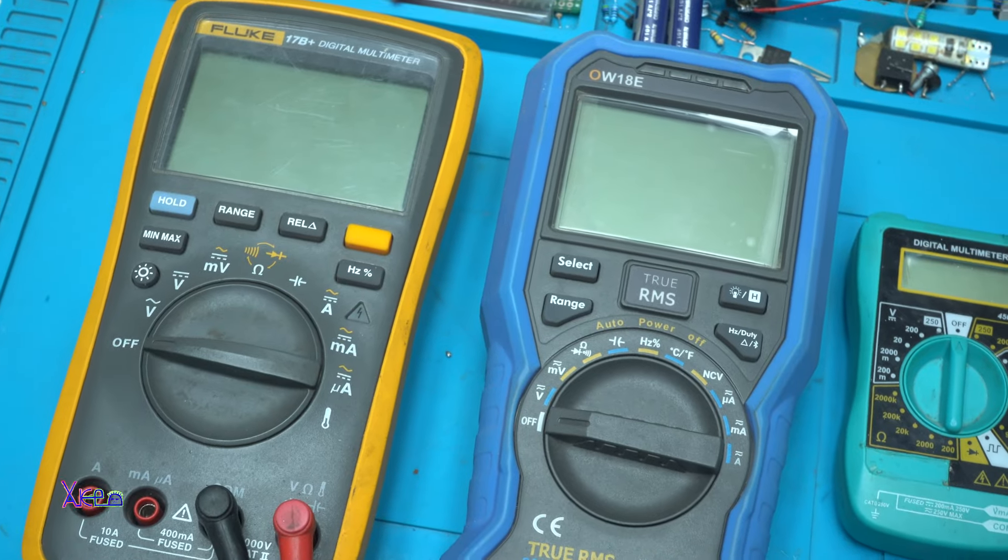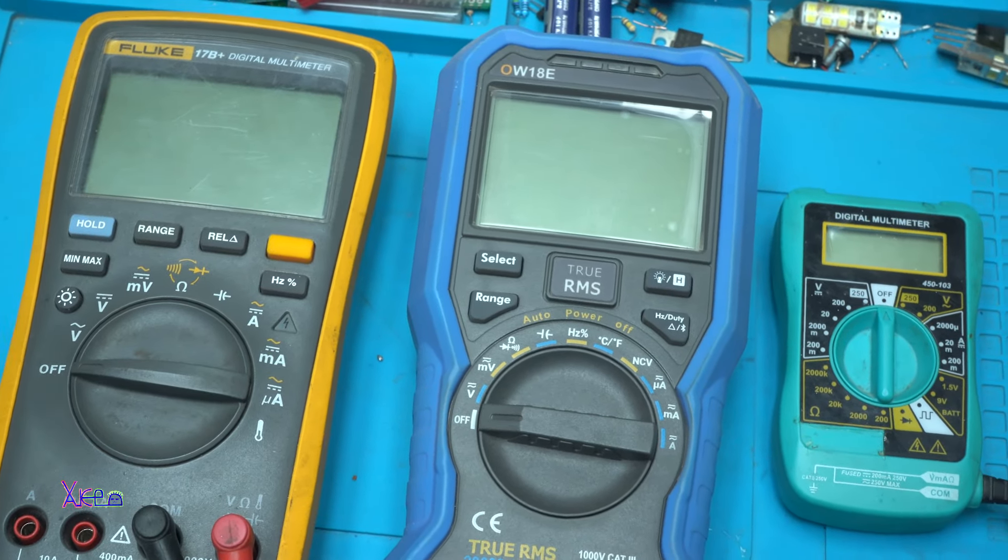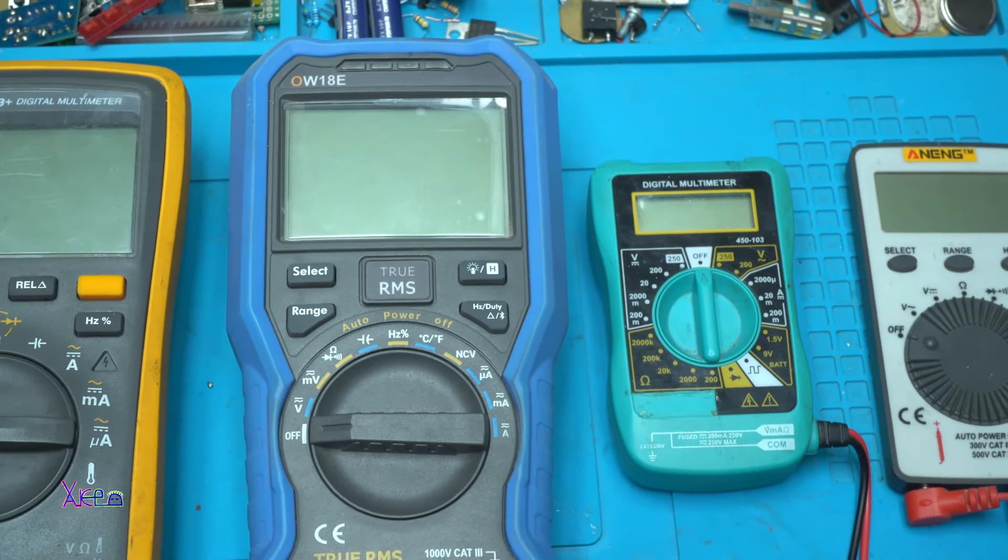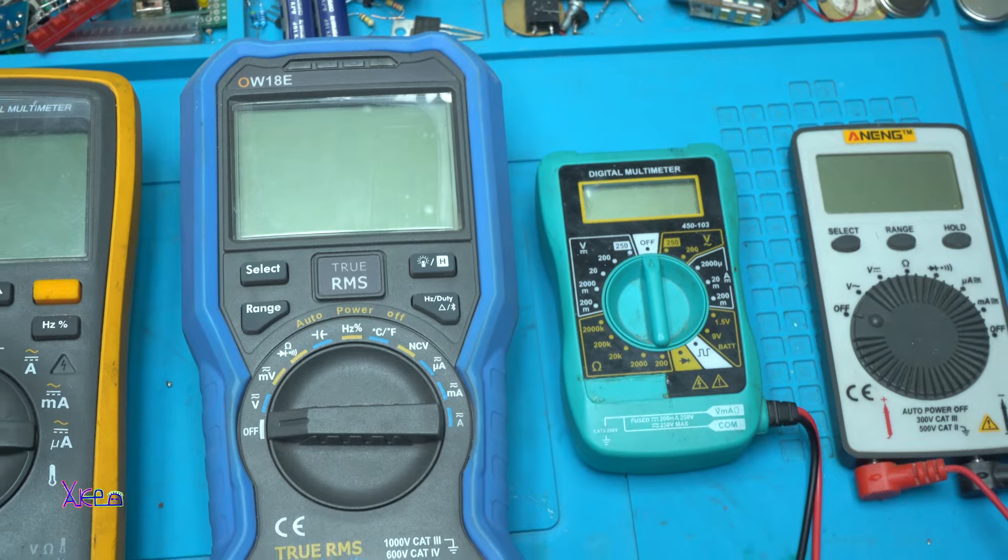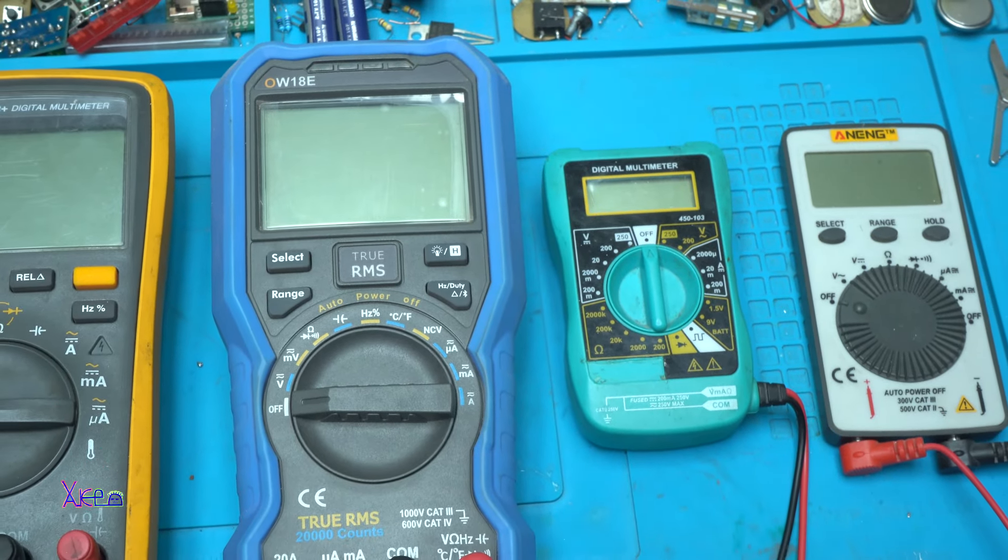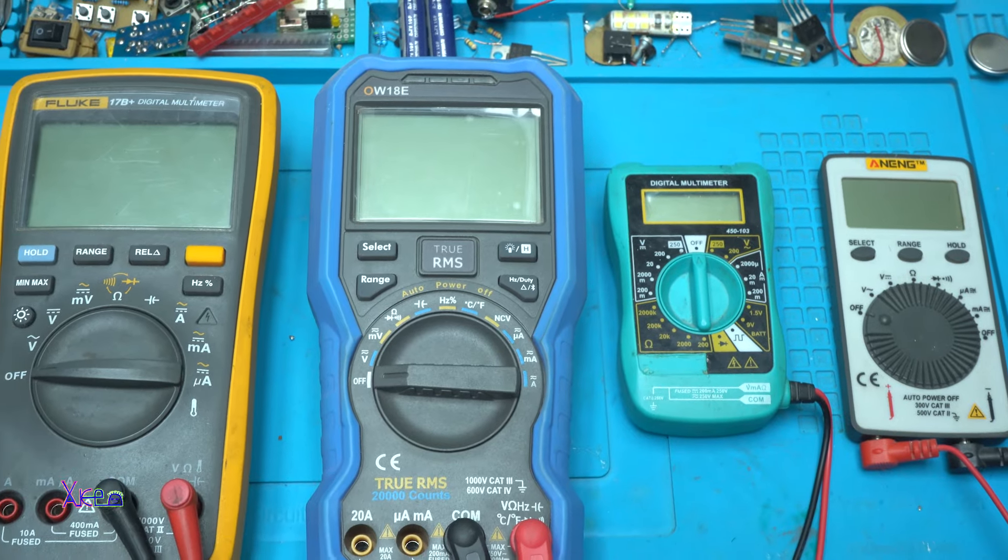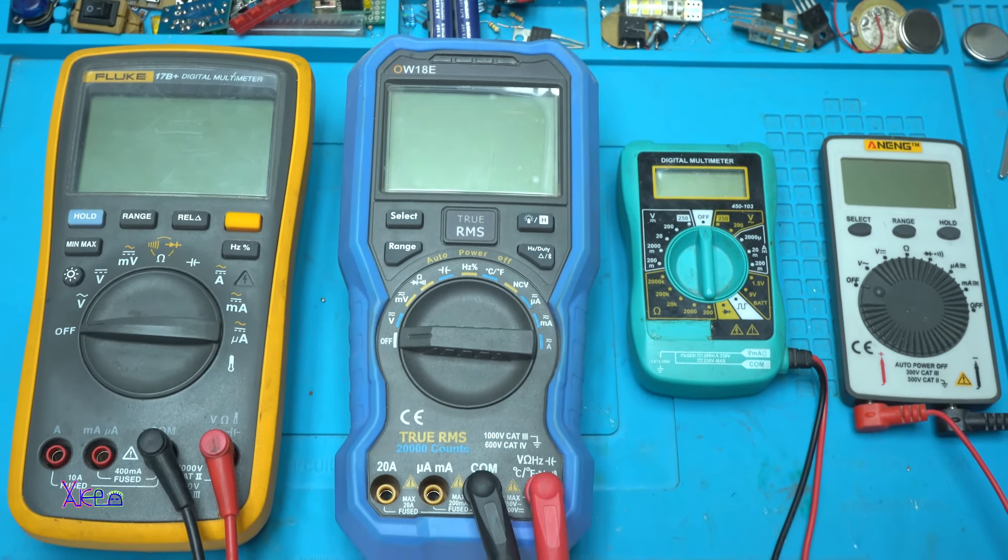What is DMM or digital multimeter? A digital multimeter is an electronic device used to measure different electrical properties, including voltage, current and resistance. The device displays measurements on a digital screen, making it easy to read and understand the results.